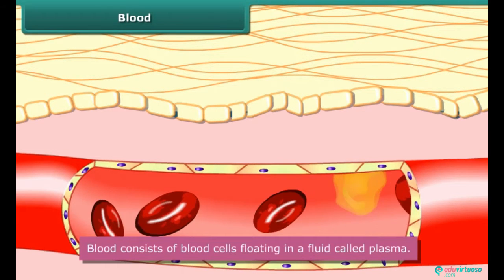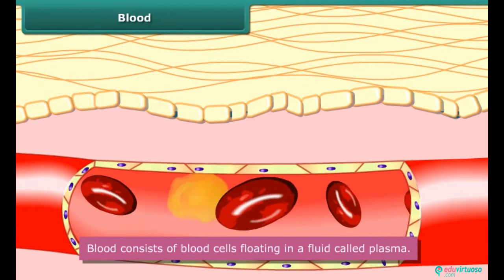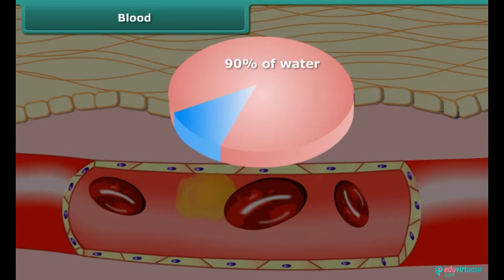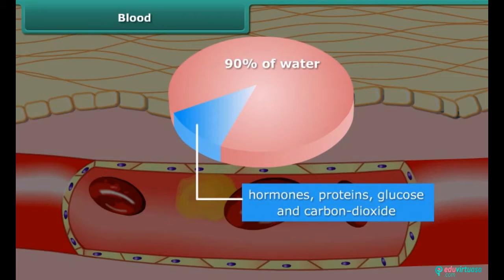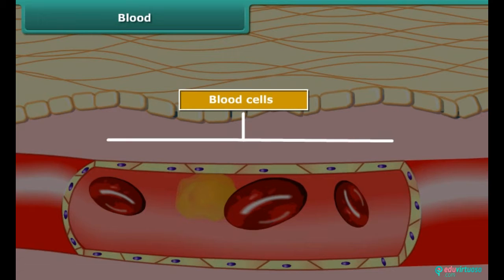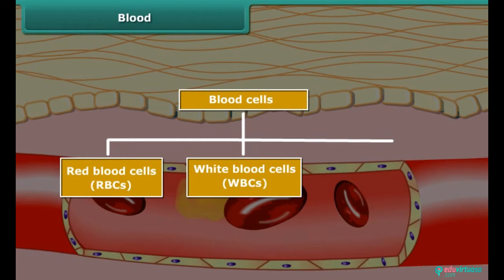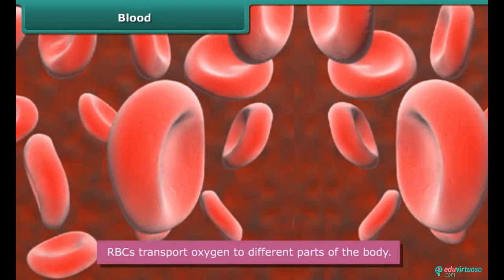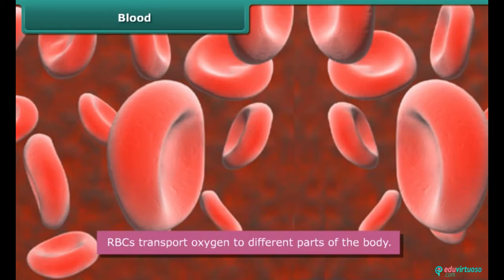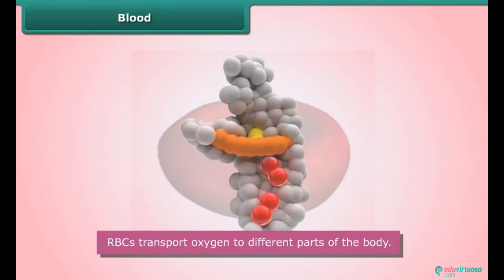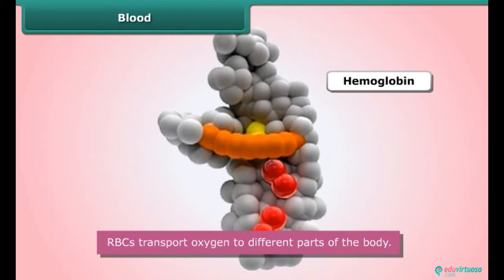Blood consists of blood cells floating in a fluid called plasma. Plasma is yellow in color; 90% of it is water. Besides water, plasma contains hormones, proteins, glucose, and carbon dioxide. There are three types of blood cells: red blood cells (RBCs), white blood cells (WBCs), and platelets. RBCs are also known as erythrocytes. They are disc-shaped and contain a protein called hemoglobin, which is rich in iron and gives blood its red color.